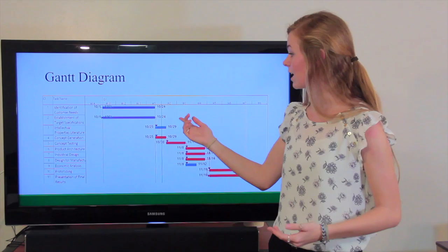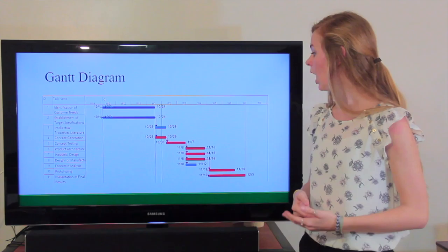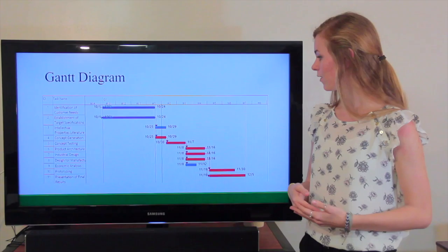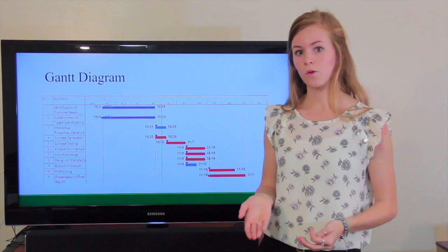Next, we worked to develop a Gantt chart, and this was to help keep our team on task and on time with the tasks that we need to accomplish. So far we have completed the identification of customer needs and the establishment of target specifications. The rest of the tasks that are highlighted in red is the critical path for the rest of our project. These are the tasks that will take the longest, and so if any of those run over schedule, it will end up delaying the completion of the entire project.